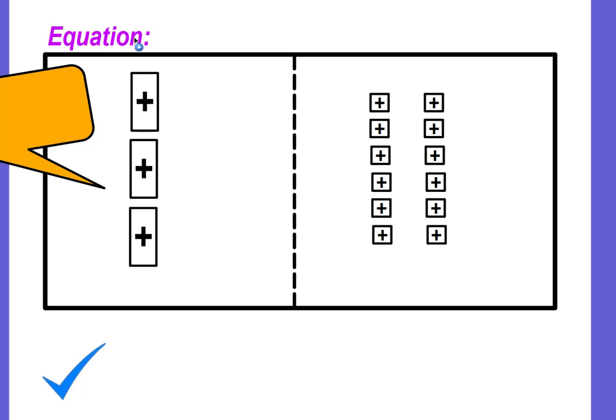This equation is 3x equals 12. You can see that there are 3x tiles. Remember, this is an algebra mat. The line down the center represents our equal sign. On the left side, we have 3x's. On the right side, we have 12 positive unit tiles. Now, this is not addition and subtraction where we need to make zero pairs.